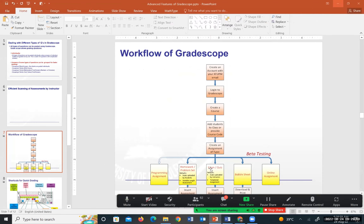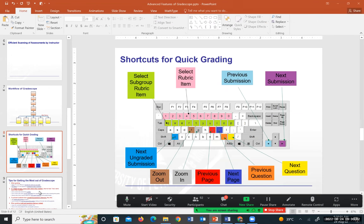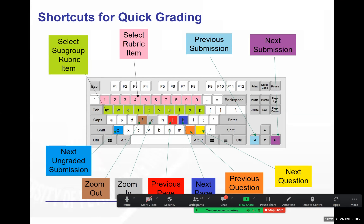One nice feature of GradeScope is that it simplifies the grading process through keyboard shortcuts, similar to how Ctrl+C and Ctrl+V work in Windows. GradeScope has many shortcuts that help you grade at a much faster speed. The number keys 1 through 9 and then 0 are used for selecting rubric items — each rubric item has a number in front of it that you can press to select it, instead of using the mouse to click.